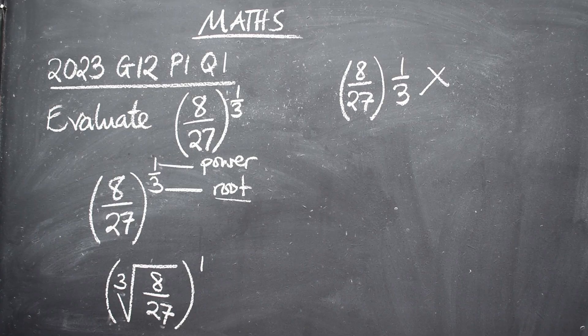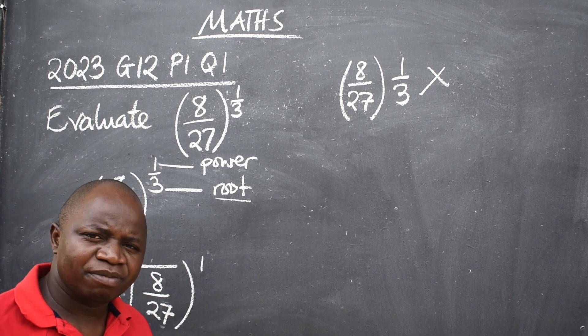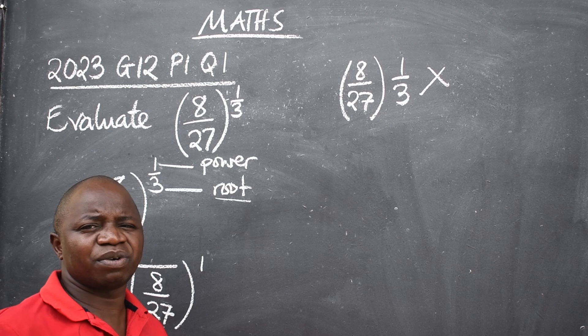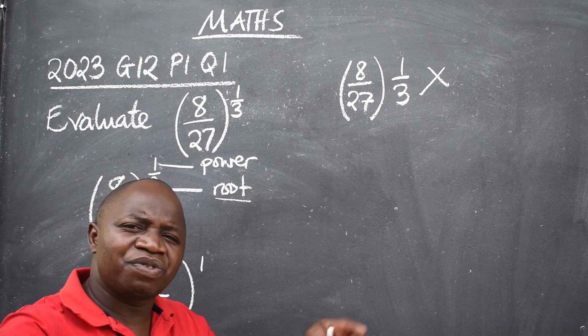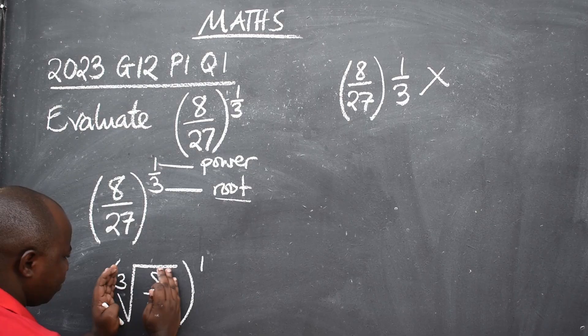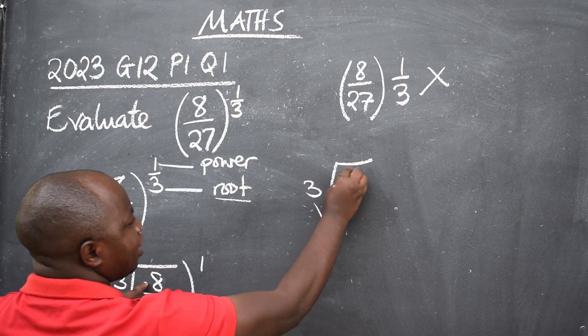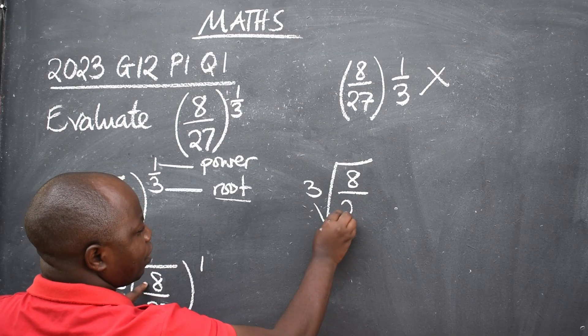It is now about the understanding here. Since it is to the power 1, even if we ignore it, no problem. Unless if there were any other number 2, 3, 4. But since it is 1 you will ignore. Concentrate on this. So we have cube root of 8 over 27. You are now going to write this in another form.